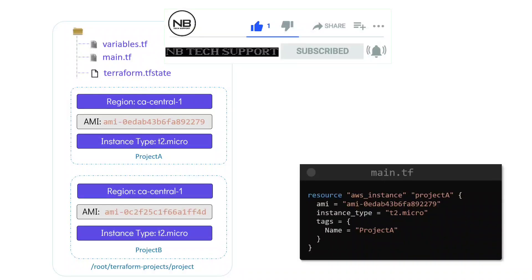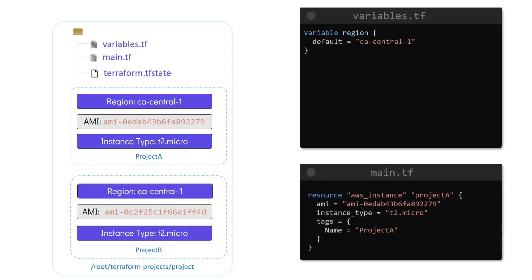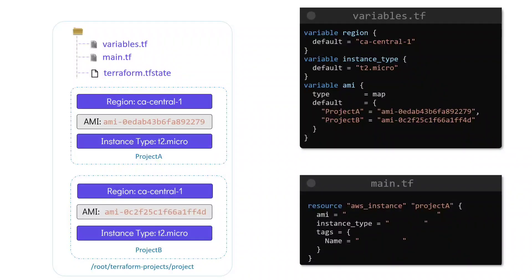To have a single configuration that can achieve this, we update our configuration file. We have the variables.tf file with the variable region set to CA Central 1. We remove all hardcoded values from main.tf and configure them as variables in variables.tf. We add an instance type with a default value of T2 Micro, and a new variable called AMI of type map, with two key-value pairs: Project A mapped to the AMI ID ending with 279, and Project B mapped to the AMI ID ending with F4D. In main.tf, we set the instance type to use the variable defined in variables.tf.